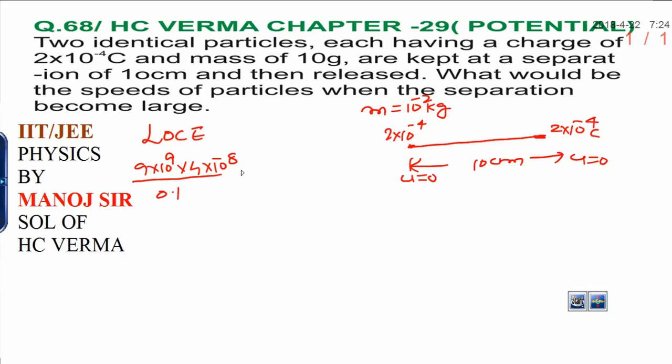because initial kinetic energy is 0. But when they are released, they went to the large distance. Large distance means separation is infinity. And separation in infinity, it means potential energy becomes 0.